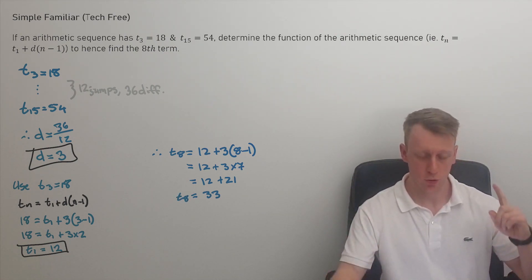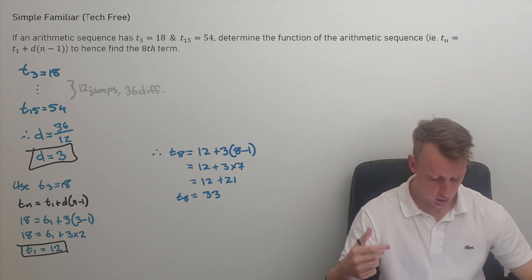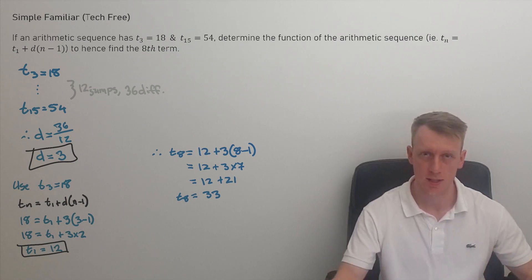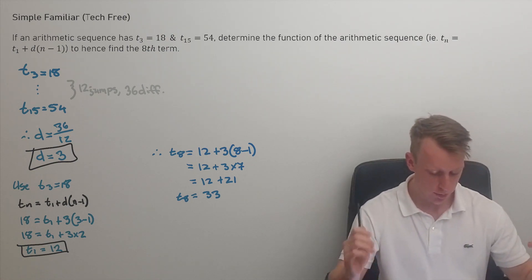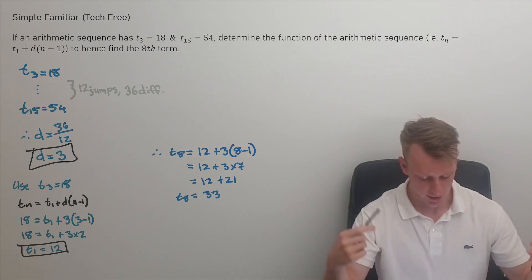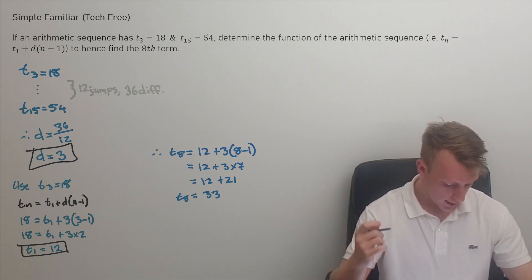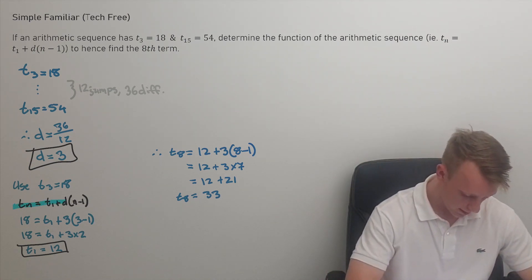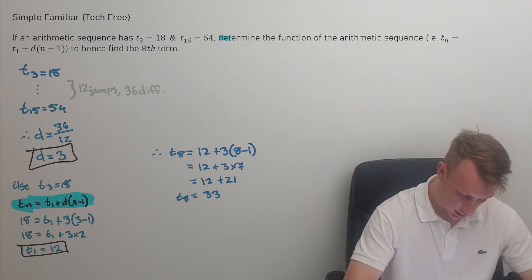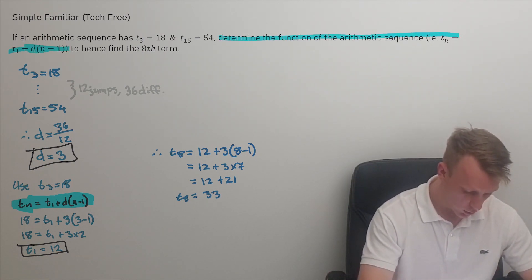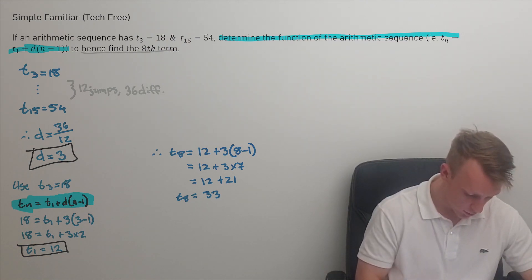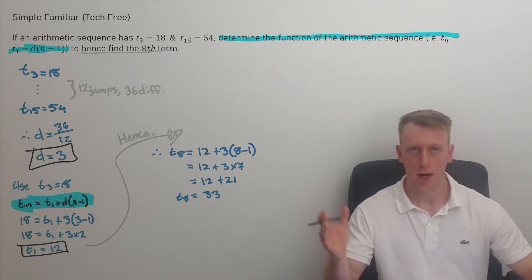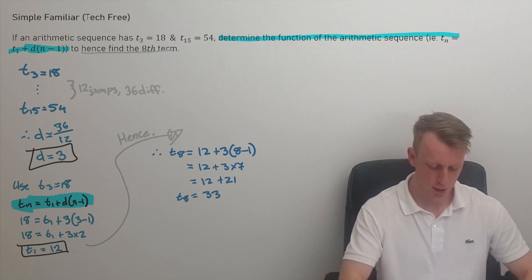So we can see the solution: between the third term and the 15th term there were 12 jumps with a difference of 36 numbers between each term, so the common difference is three. You can then plug it into the general term to find out what the first term is — that's the term function — and then hence determine the eighth term.